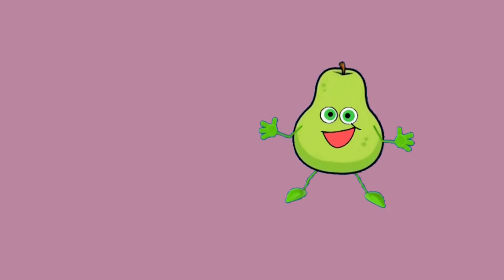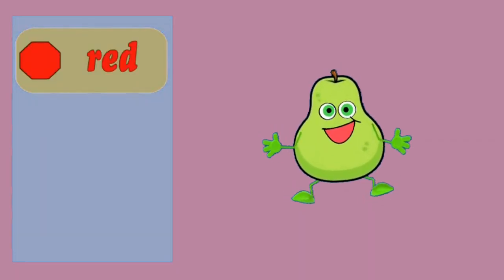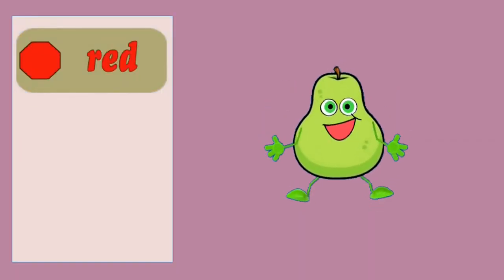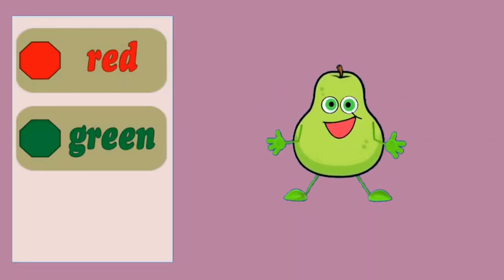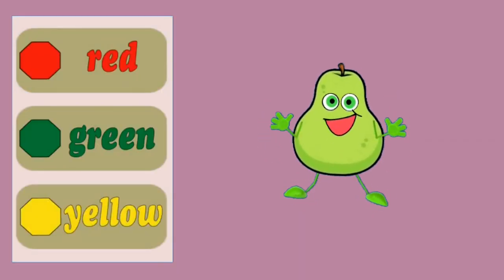What is the color of pear? Red. Green. Yellow.